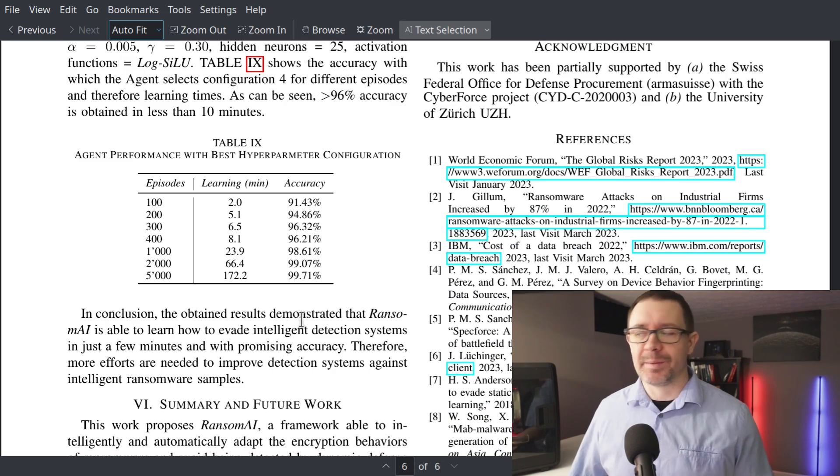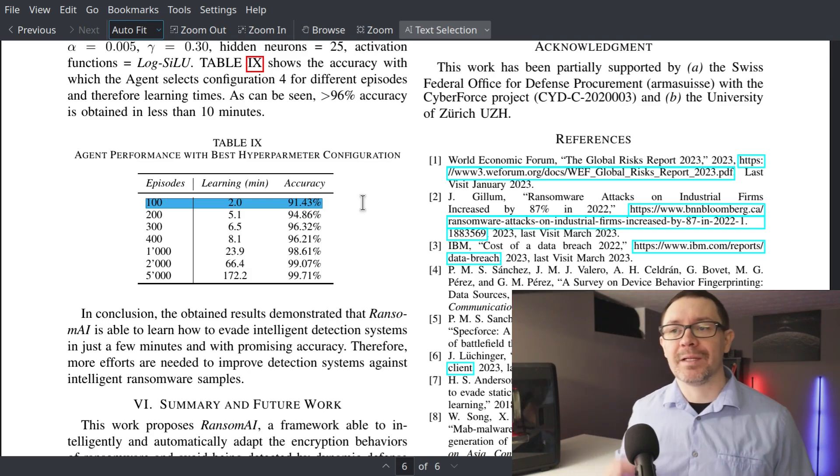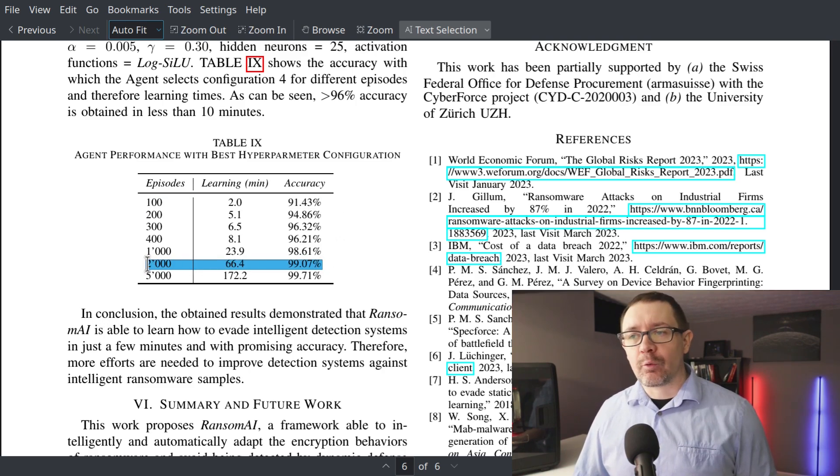So how well did it do? And this is actually the scary part. So you can see that after 100 episodes, two minutes of learning, it achieves an accuracy of 91%. That means that it's able to encrypt the system 91% of the time with just two minutes of learning using a simple deep Q learning agent running on sparse hardware, not some giant H100 cluster. Within about an hour of learning, it achieves a 99% encryption rate, pretty startling stuff.